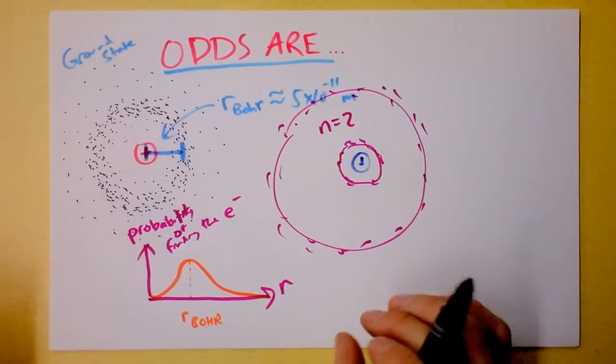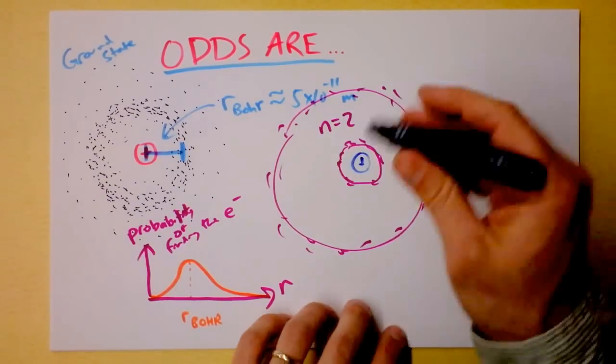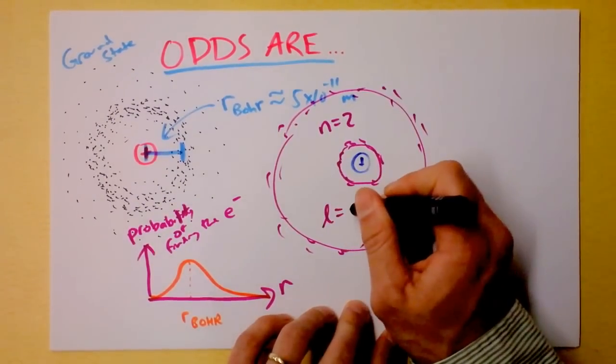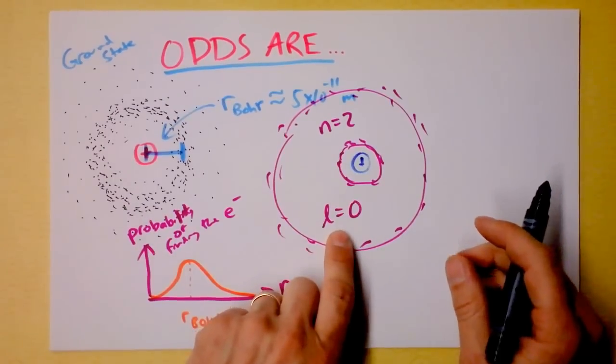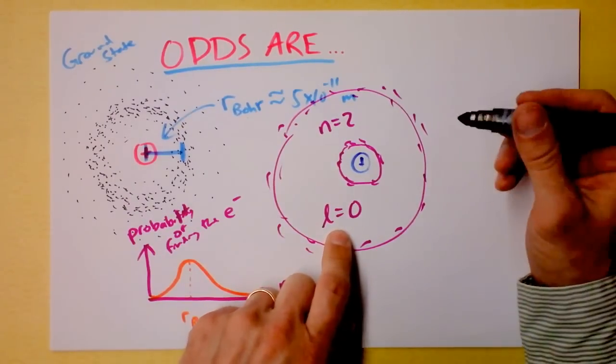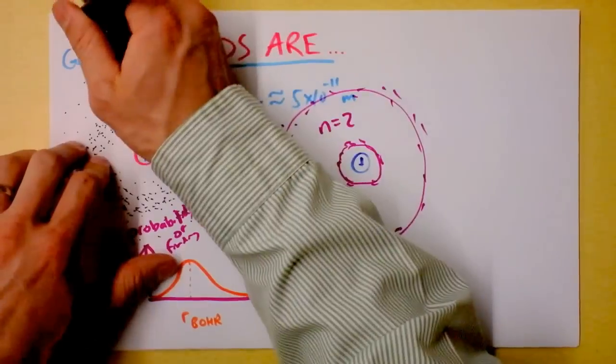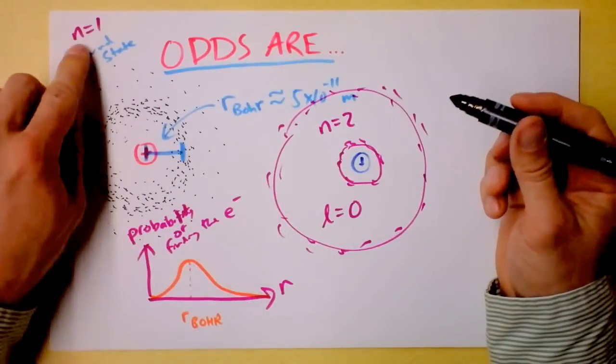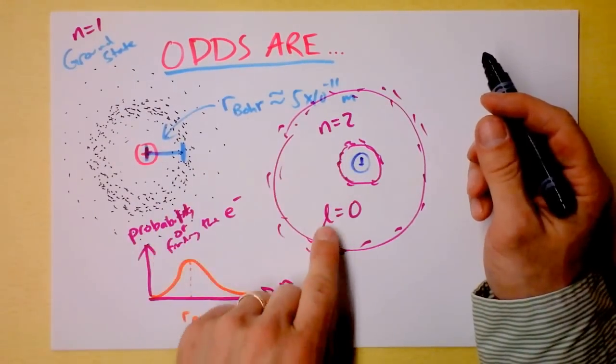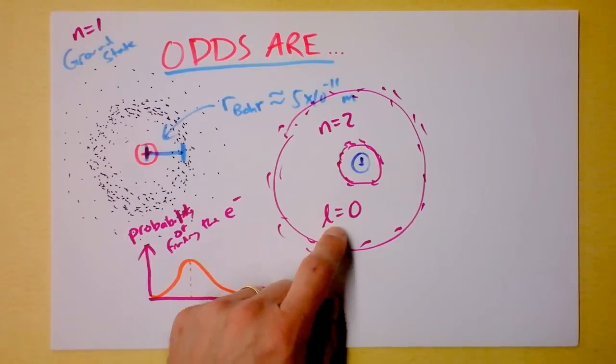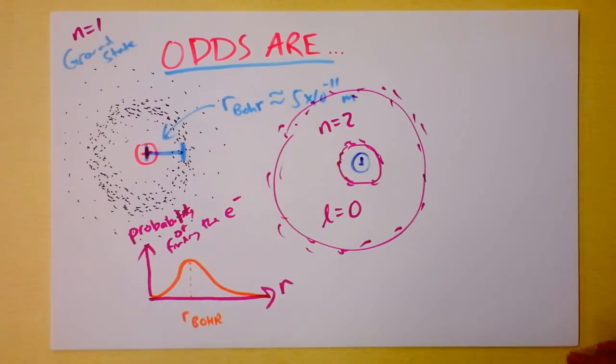So this is n equals 2. If I have a different case, like n equals 2, l equals 0. Oh man, we've got an angular momentum quantum number, too. This is a quantum number, n equals 1, n equals 2. And l is another quantum number. You're going to have a whole bunch of quantum numbers to pay attention to, but not this time around. Study some more physics. Take a quantum mechanics course. That will go into much greater detail.